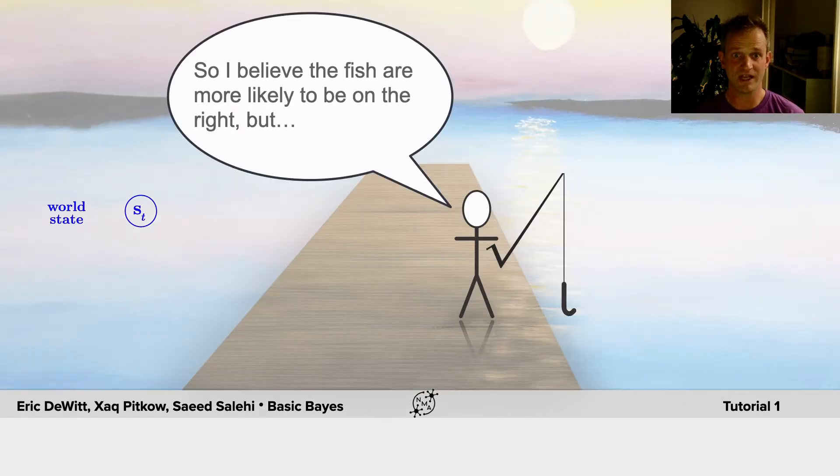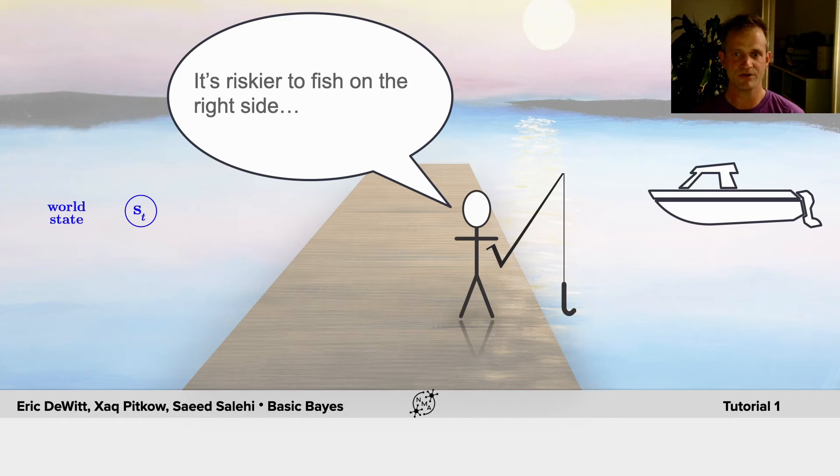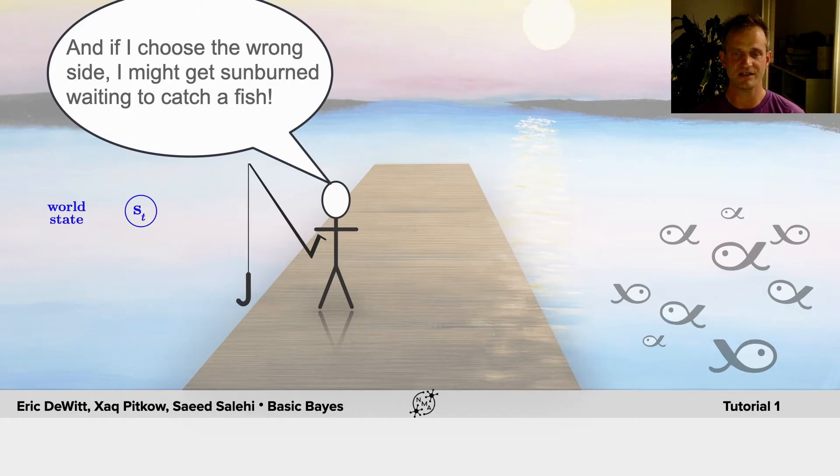So I believe the fish are more likely to be on the right, but remember, there's the motorboat, which has a cost to fishing there, and if I choose the wrong side, I might get sunburned waiting to catch a fish.